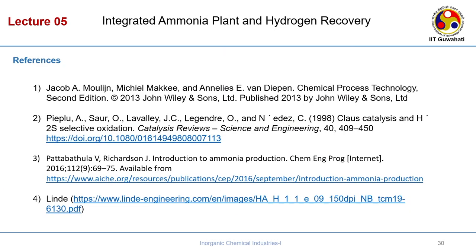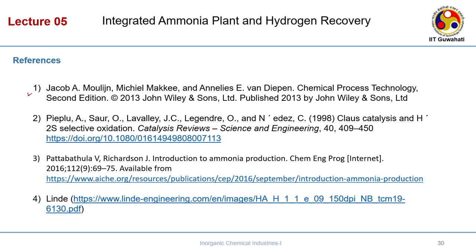In the next class, we will study urea synthesis where ammonia is used as the raw material to prepare urea. Please go through the references — the main textbook, the introduction to ammonia production, and the Linde process link which discusses the PSA flowsheet in detail. Thank you.